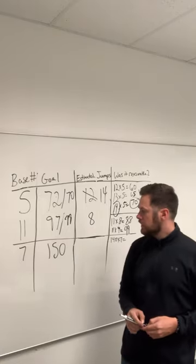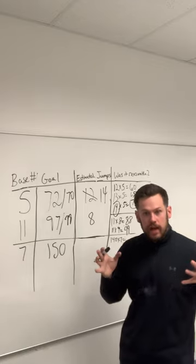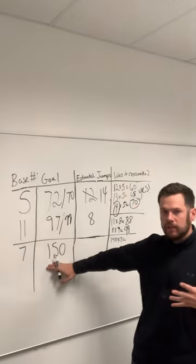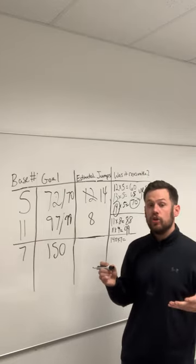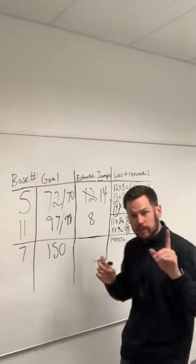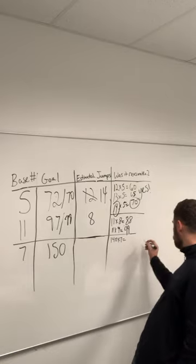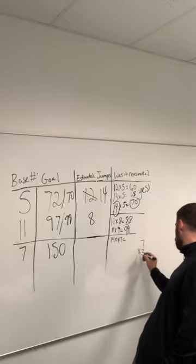We know that seven times some number gets to 150. Let's try seven times two—seven times two is 14. We know that seven times two equals 14.